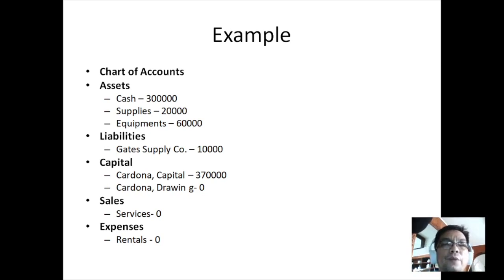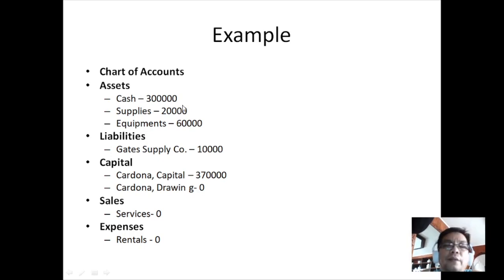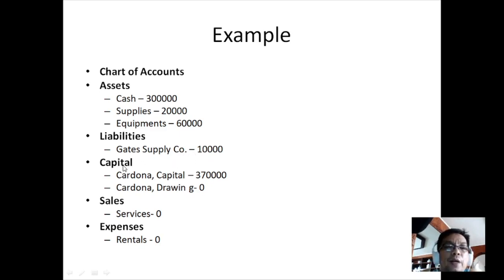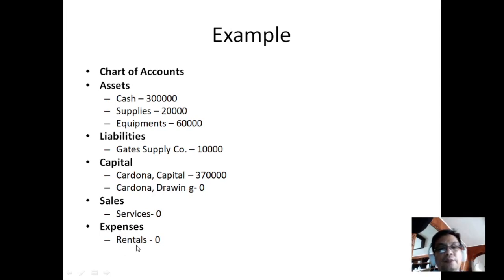In this example, we have a chart of accounts. For assets we have Cash (balance: 300,000), Supplies (balance: 20,000), and Equipment (balance: 60,000). For liabilities we have Gate Supply Company (balance: 10,000). For capital we have Cardona Capital (balance: 370,000). We also have Cardona Drawing, Services Revenue, and Rentals Expense, all with zero balances.